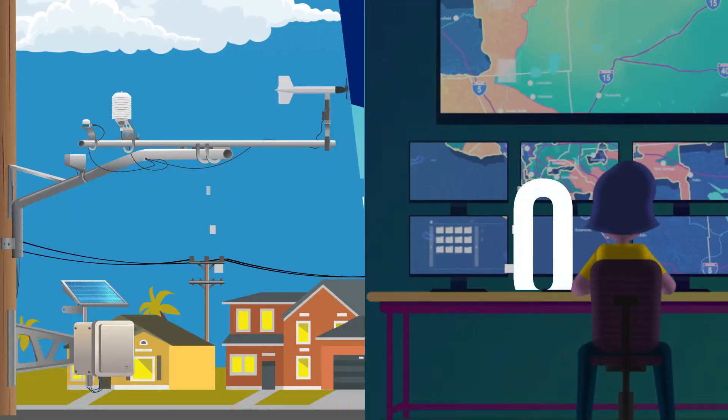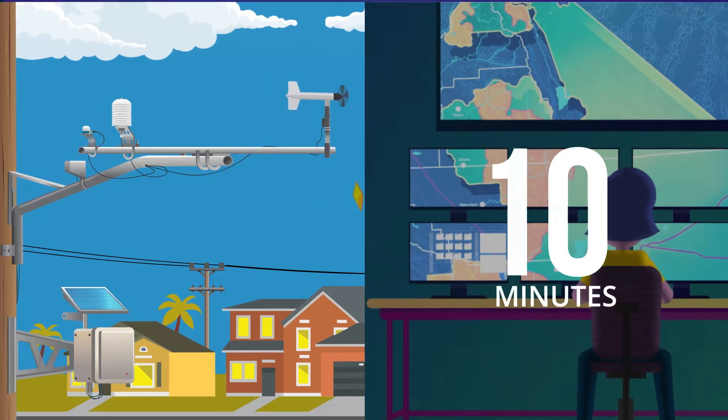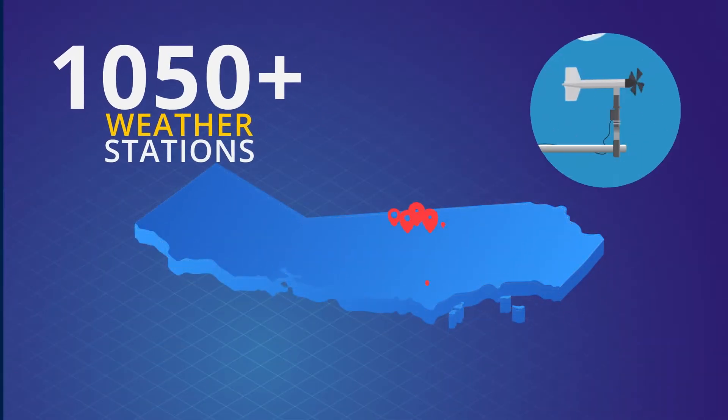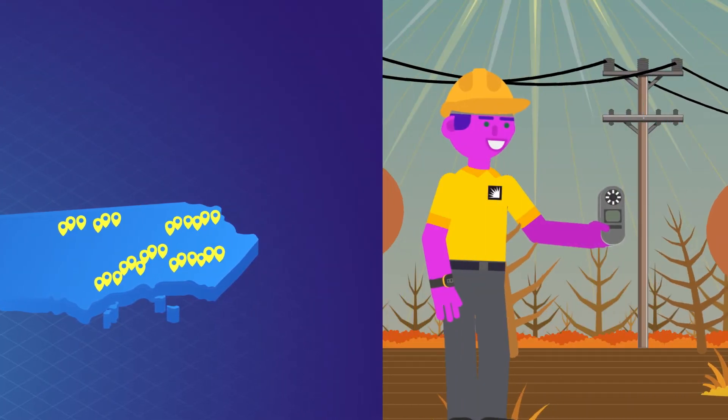On the day of the event, we get readings every 10 minutes from more than 1,050 weather stations. We also gather data from our crews equipped with mobile weather units.